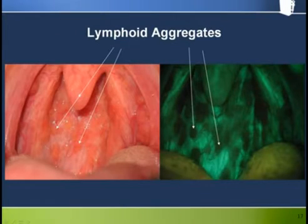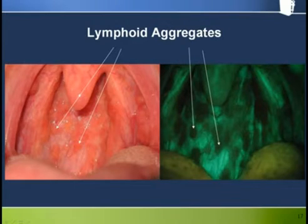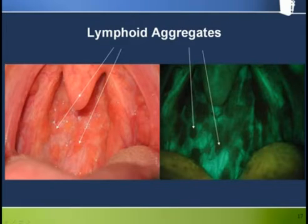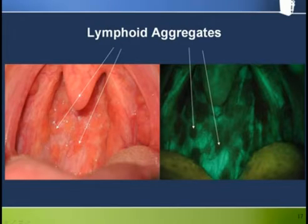Occasionally, collections of so-called lymphoid aggregates can populate the rear oropharyngeal wall and, because of their blood content, have a strikingly dark appearance when viewed under fluorescence visualization. Close examination of this same area under white light reveals that these dark areas exactly correspond to the red nodules of lymphoid tissue. These are a normal variant that are completely benign.